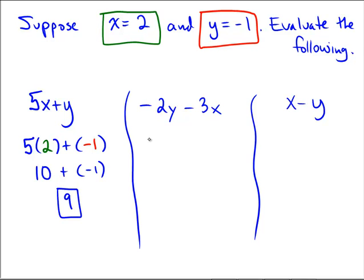Next up we have negative 2y minus 3x, where y is being replaced with negative 1 and x is being replaced with 2. Hopefully you caught the fact that I reversed the variables that time, the x and the y.